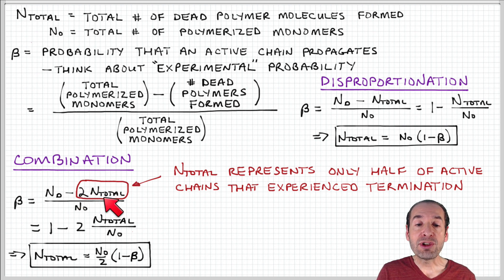So when we do that, we have two n-total in the numerator. And then when we rearrange, we get an expression for n-total. It's equal to n-naught over two times one minus beta. So now we have an expression for n-total, which was the remaining unknown that we needed to determine in order to calculate or obtain an expression for the weight average molecular weight.